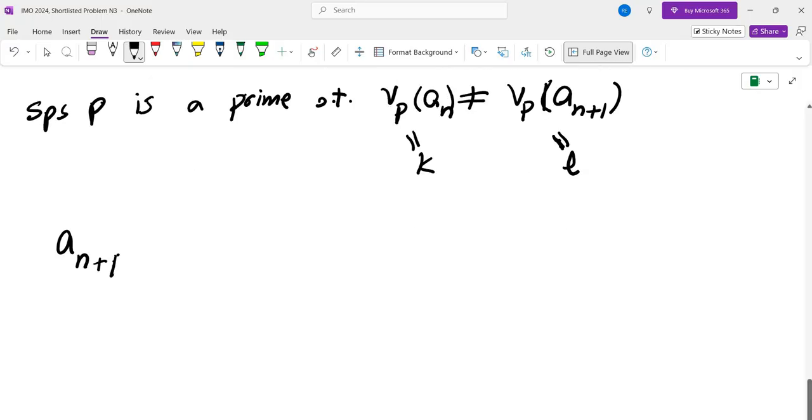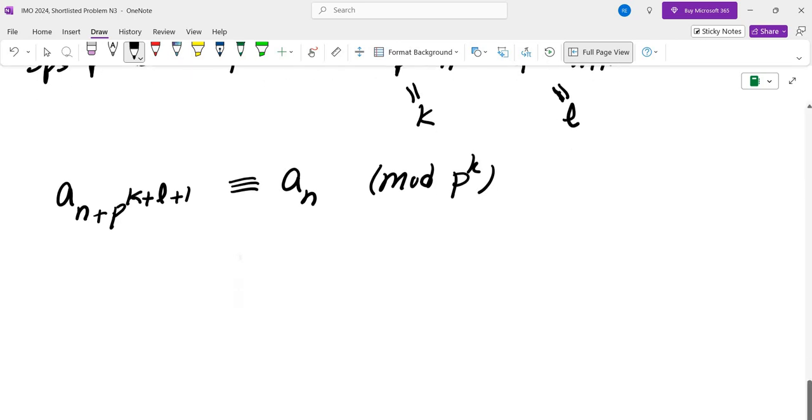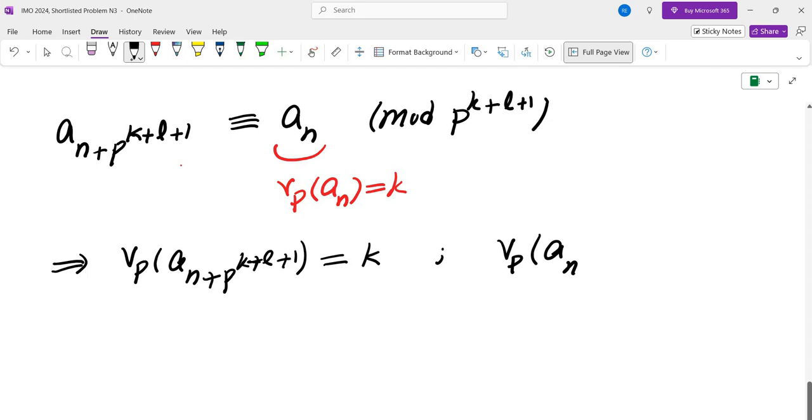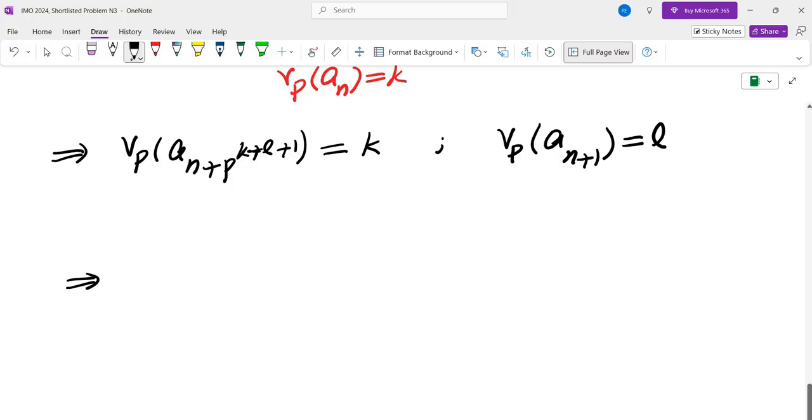So now what are we going to do? We're going to look at the terms in the sequence far in the future terms and we're going to get a contradiction. So let's assume this is K and let's assume this is L. Look at A sub n plus P to the power of K plus L plus 1. If we take this one mod P to the K, this would be exactly A n by the discussion that we had. Mod P to the power of K plus L plus 1. Now because V P of A n is K, the V P of A n plus P to the power of K plus L plus 1 is going to be K as well. So now V P of this is K, but we know that V P of A sub n plus 1 is L.